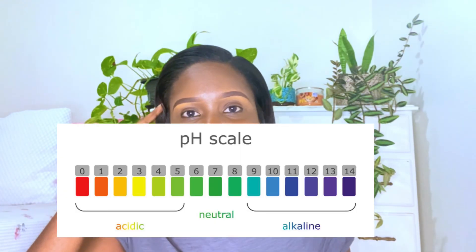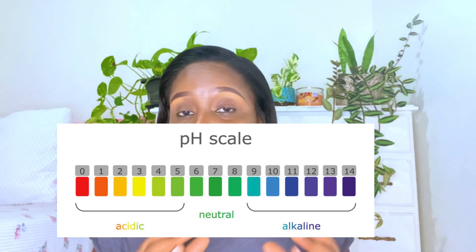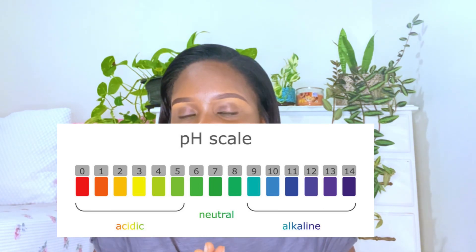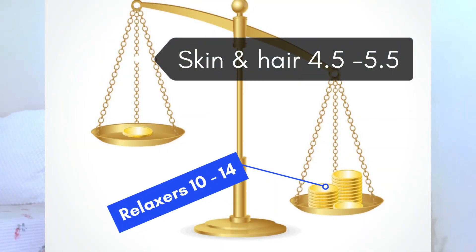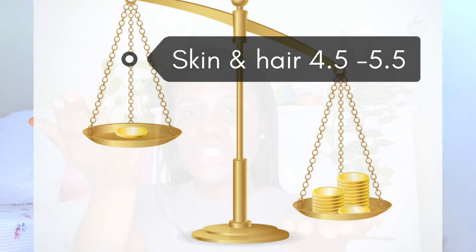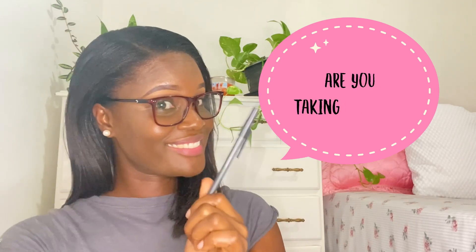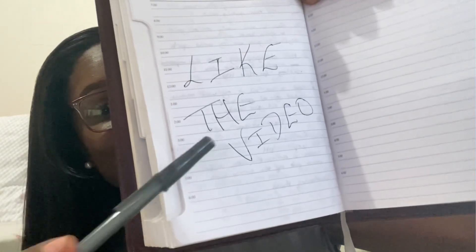On the pH scale, our skin and our hair sit at 4.5 to 5.5. So can you see the imbalance there? 4.5 versus 10 to 14 — there's pretty much no balance when it comes to alkaline and acidity. Since we are talking about the effect that relaxers have on our hair, we are going to be looking more towards the alkaline side of the pH scale.